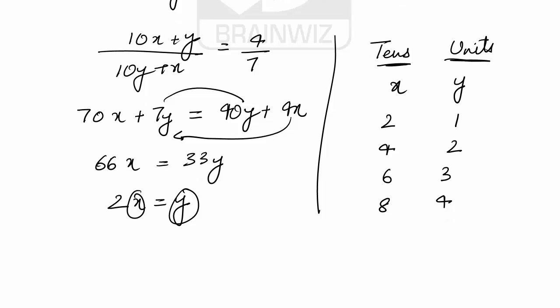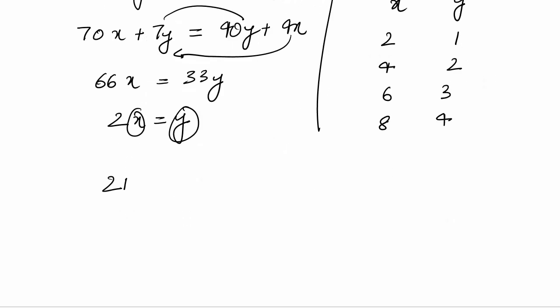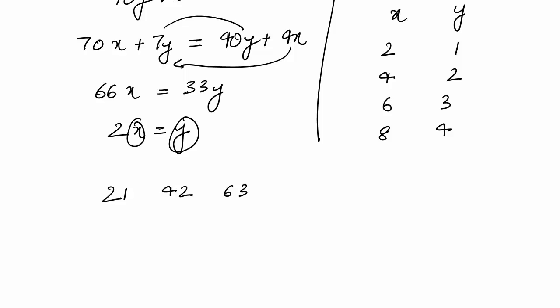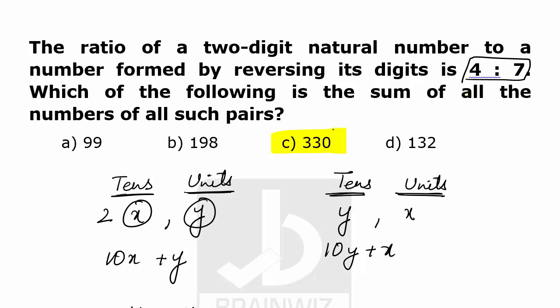So we have been given the numbers like 21, 42, 63, 84, and the numbers which are formed by reversing are 12, 24, 36, 48. When we add all such pairs, it will be equivalent to 330. So option C is the perfect answer. Thank you.